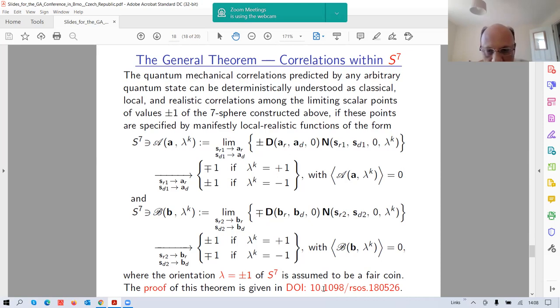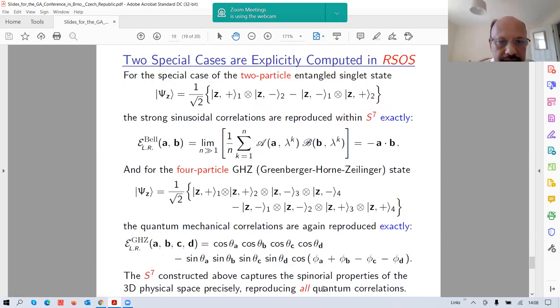Imagine Alice and Bob and Charlie and Derek and all kinds of people trying to calculate correlations. Then they would follow my prescription and they would find exactly the same correlations that are predicted by quantum mechanics. The proof of this theorem is in my Royal Society paper. In addition to this proof, I have explicitly calculated the singlet state again, the correlations from the singlet state again, and I have produced the right result. And I have done for four particle state explicitly. That also completely confirms with the prediction of quantum mechanics. Since there were, I assume there will be many questions, I can finish early.